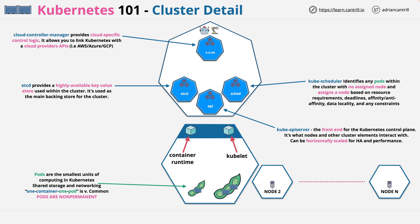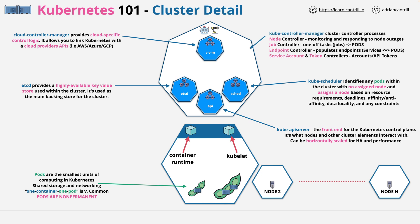Lastly in the control plane is the kube-controller-manager, and this is actually a collection of processors. We've got the node controller, which is responsible for monitoring and responding to any node outages. The job controller, which is responsible for running pods in order to execute jobs. The endpoint controller, which populates endpoints in the cluster — this is something that links services to pods. And then the service account and token controller, which is responsible for account and API token creation.